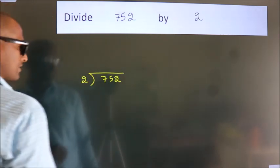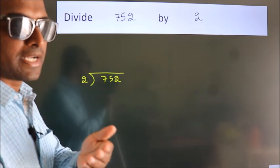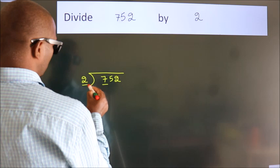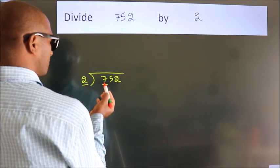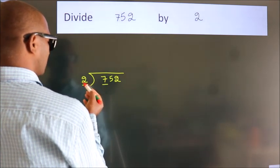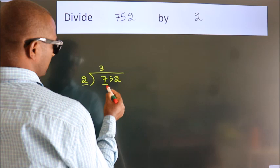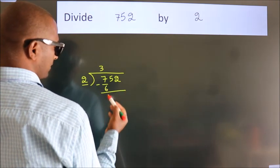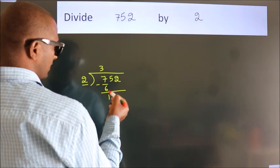This is your step 1. Next, here we have 7, here 2. A number close to 7 in 2 table is 2 threes, 6. Now, we should subtract, we get 1. After this,